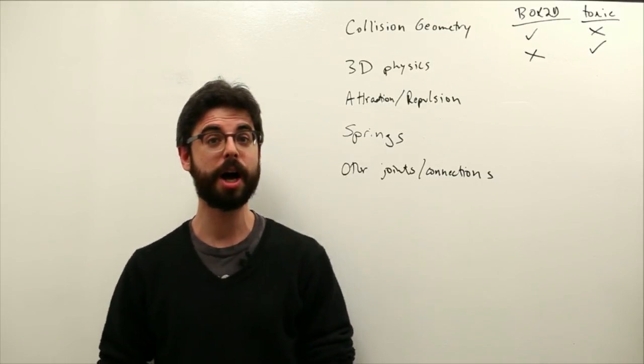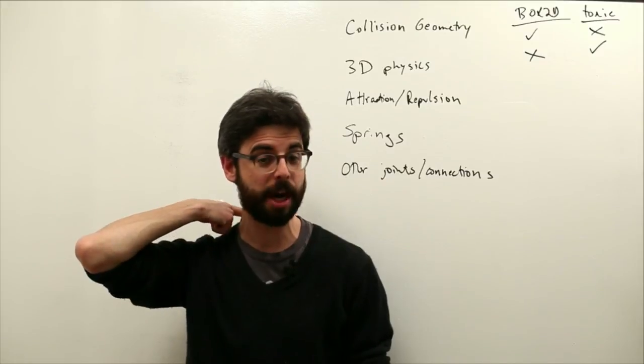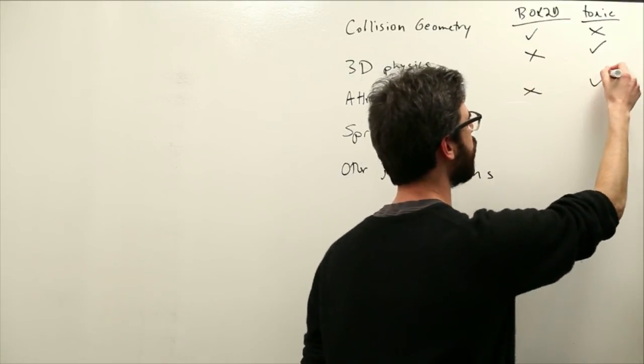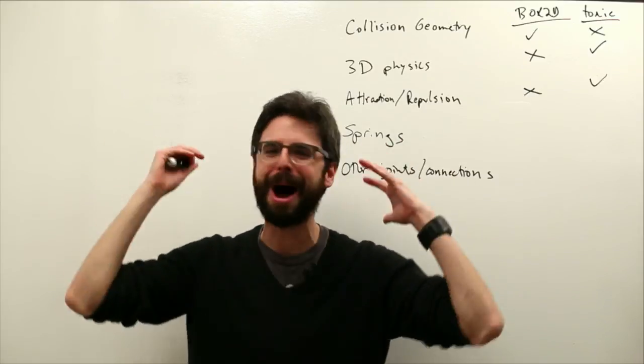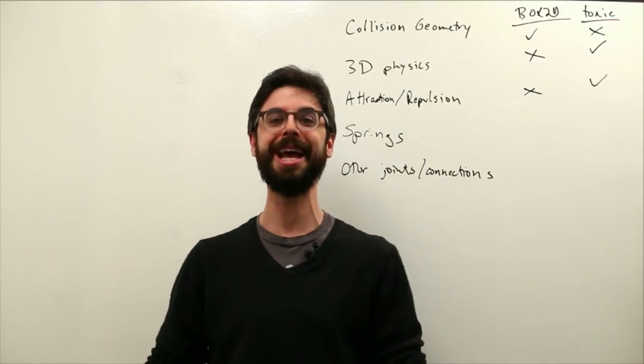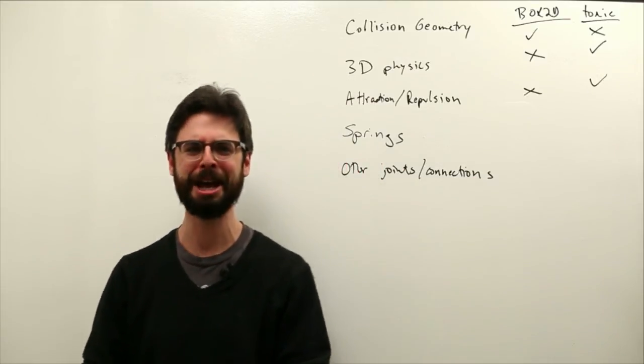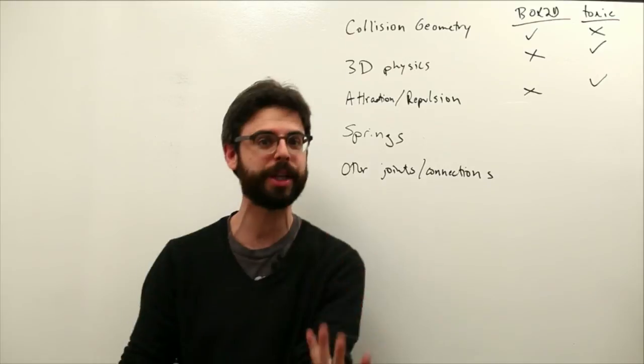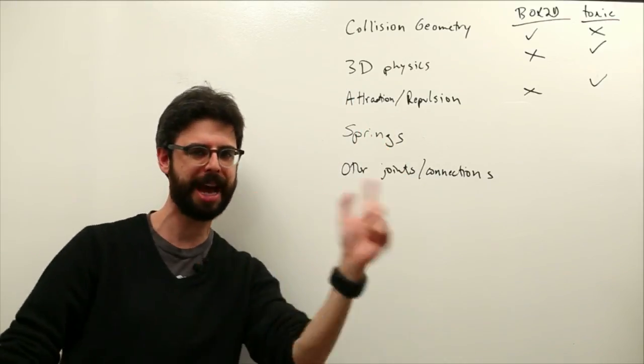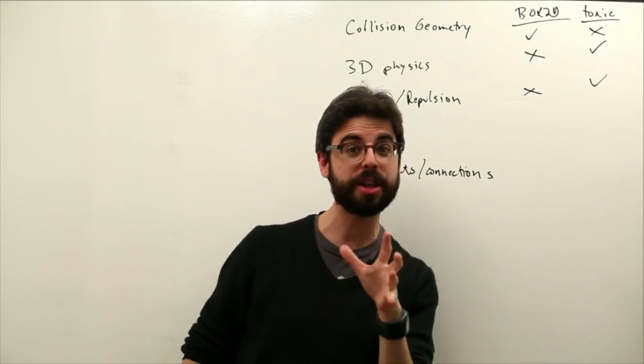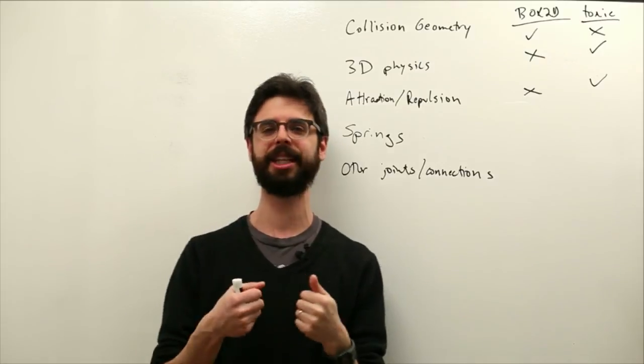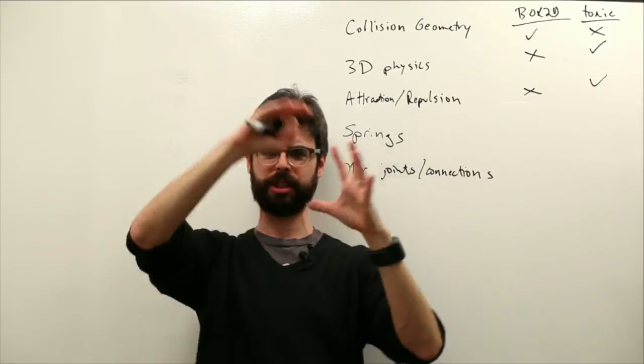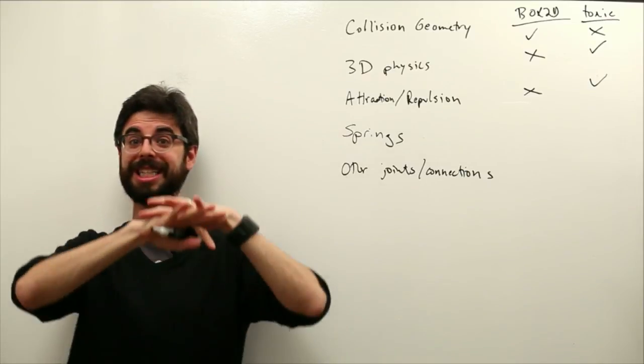One of the things we looked at a lot with our earlier examples when we started the forces model is having what is an attractive force, what is a repulsive force. Those forces are not built into Box2D, but they are built into ToxicLibs. And one of the things that's really amazing about ToxicLibs is you can create a body in the ToxicLibs world and just say it's an attractive body, and everything is always just attracted to it. That's very different than calculating a force, looping through every object in the world, checking its distance against that, applying the force. We did all of that manually in our earlier examples. ToxicLibs just allows you to say that's attractive, that's repulsive, that's neither, etc.